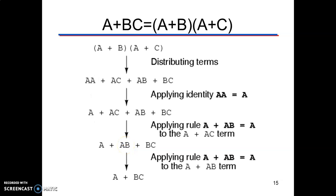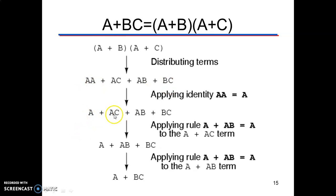Another distributive property: a + b·c = (a+b)·(a+c). Boolean addition is distributed over Boolean multiplication. Expanding (a+b)·(a+c): a·a + a·c + b·a + b·c. Since a·a = a, we get a + a·c + a·b + b·c. Using the absorption theorem, a + a·c = a and a + a·b = a, giving a + b·c, which proves the identity.